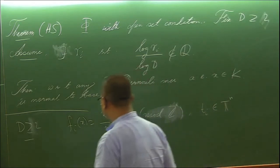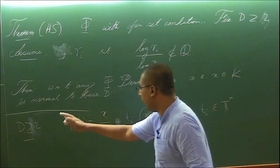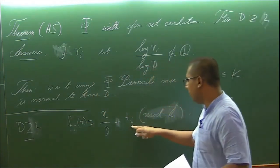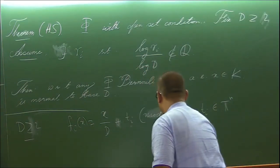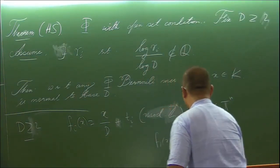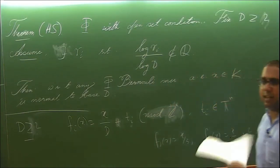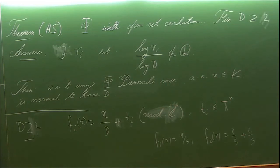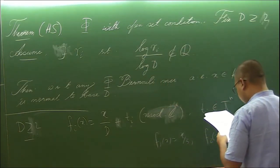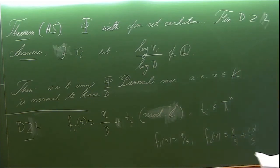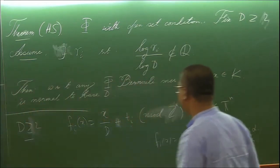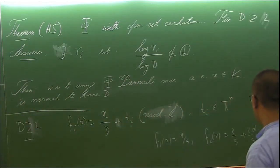Everything is now in modulo 1. Ti is in the n dimensional torus and d is an integer. For example, if the dimension is 1 and my maps are x by 3 and x by 3 plus 2 by 3, then as the attractor we get the usual middle third Cantor set. And suppose we change it a little bit and consider x by 3 plus 2 alpha by 3, then that gives rise to the Cantor set dilated by the amount alpha.